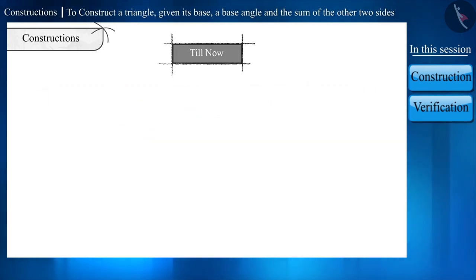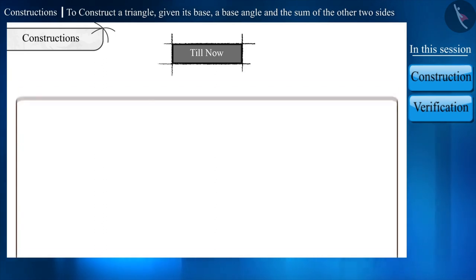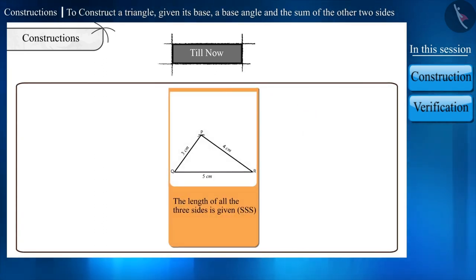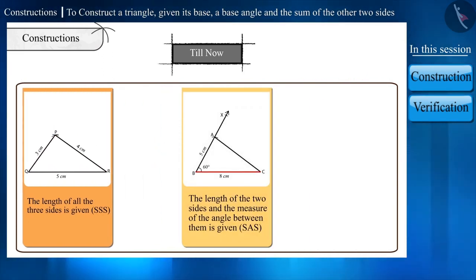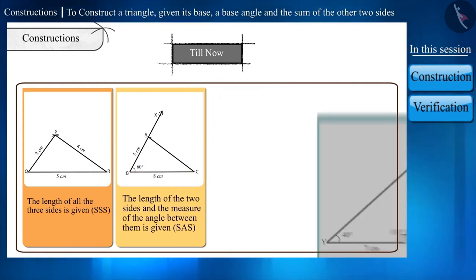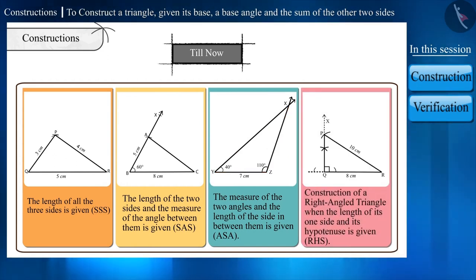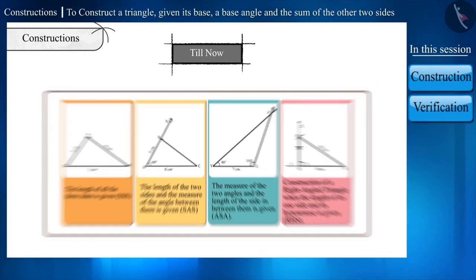In previous classes, we learned general construction of triangles: construction when the length of all sides is given; when the length of two sides and the measure of the angle between them is given; when the measure of two angles and the length of the side between them is given; and construction of a right angle triangle when the length of one side and its hypotenuse is given.